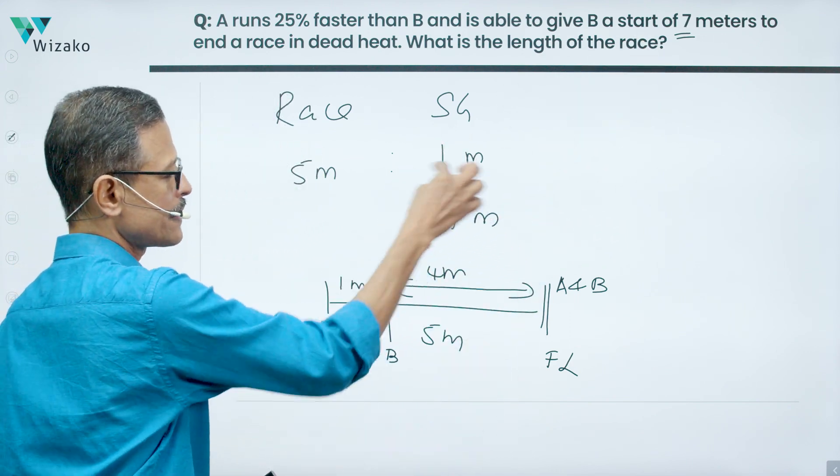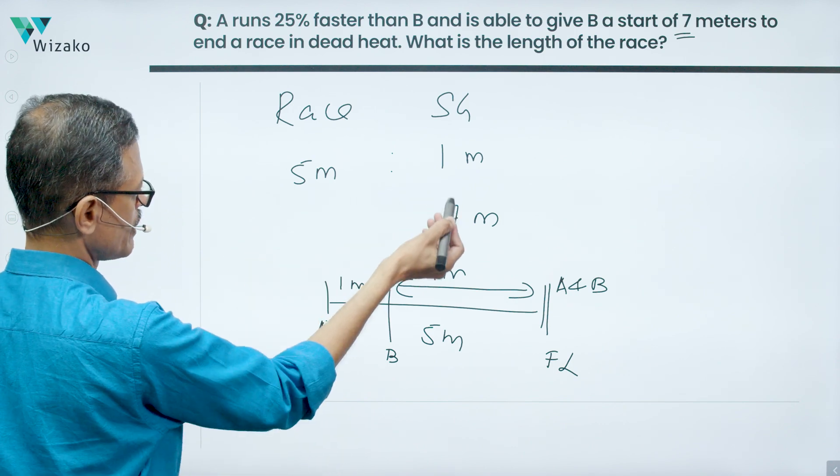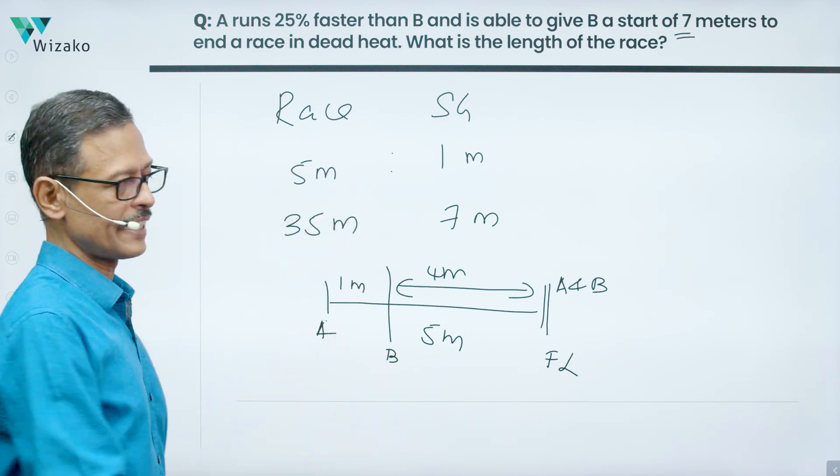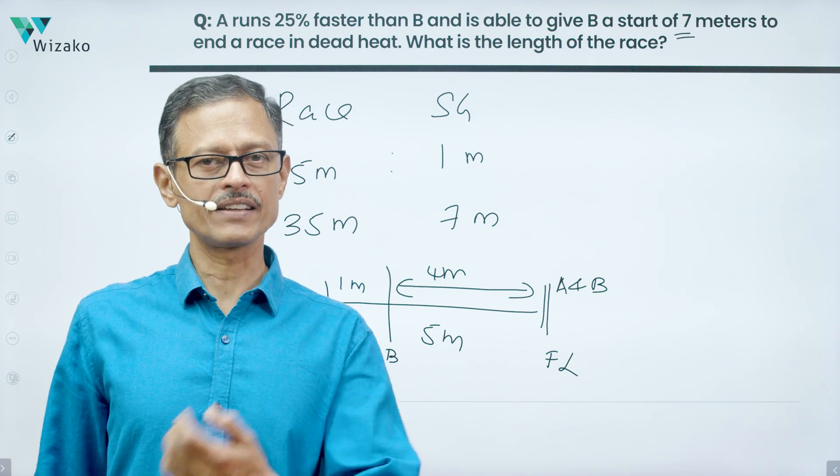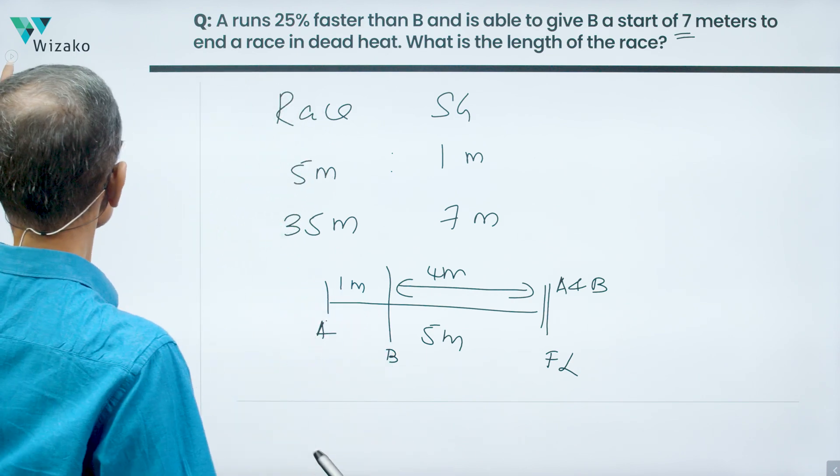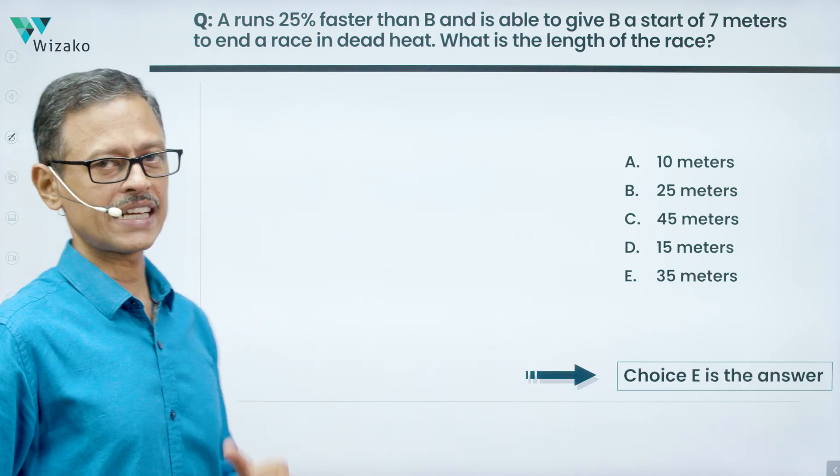Race length and start given are in the ratio of 5 is to 1. We know the start given in this question is 7 meters. So one part is 7 meters. How many meters will 5 parts be? That's going to be equal to 7 times 5. We're multiplying by 7, so multiply this also by 7, which makes it 35 meters. So length of this race where A gives B a start of 7 meters is equal to 35 meters if A runs 25% faster than B. 35 meters is choice E. Choice E is the correct answer to the question.